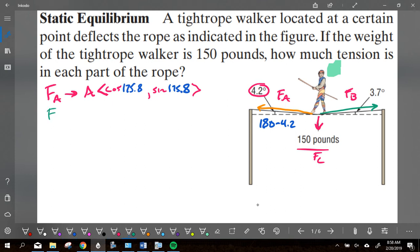That's F of A. Then we're going to find F of B. And so it's going to be whatever the tension on the rope is, cosine of 3.7, sine of 3.7, those getting your X and Y values of your vector.